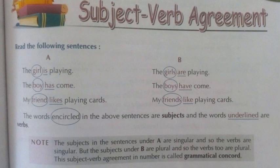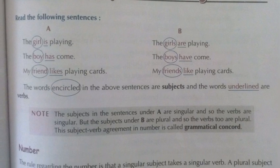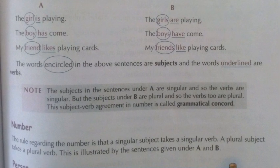'Boy has come' — 'Boys have come.' I also told you a trick: if the subject is singular, it takes verbs with 'S'; if plural, it does not take verbs with 'S'. 'My friend likes' — 'My friends like.' These differences you will understand very easily. The words encircled in the above sentences are subjects, and the words underlined are the verbs.